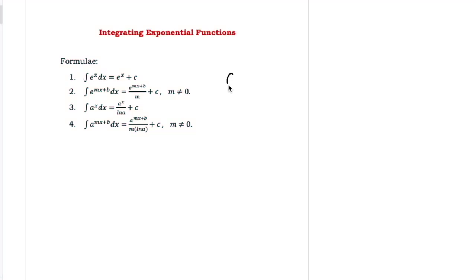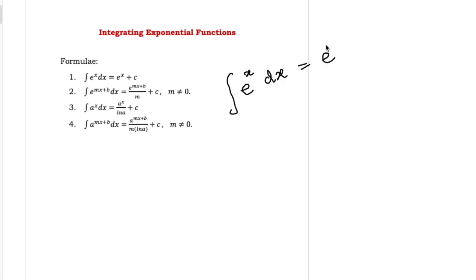Formula 1: integration of e to the power x. We know e to the power x is the exponential function having base e. So integration of e to the power x is equal to e to the power x, plus integrating constant c.